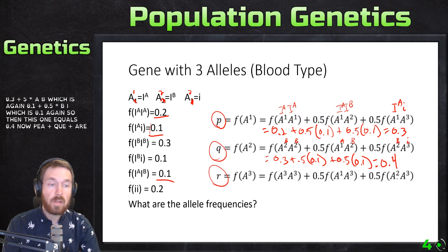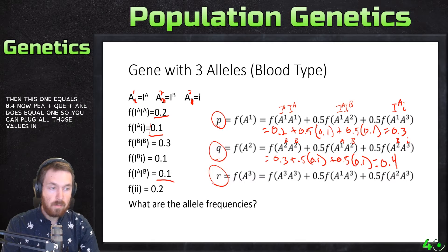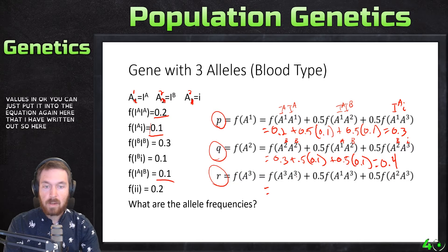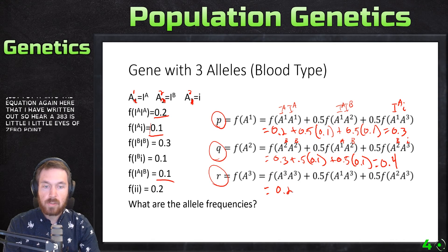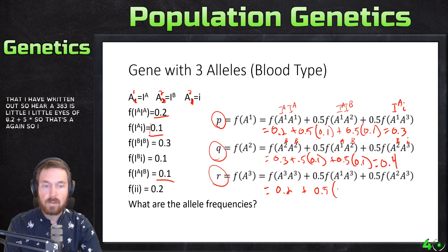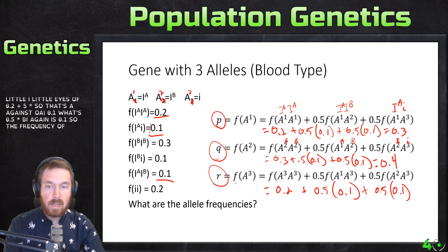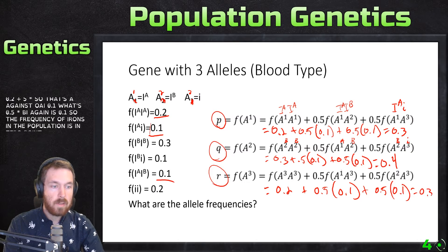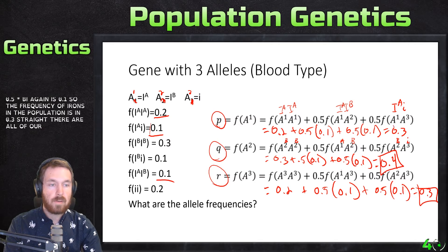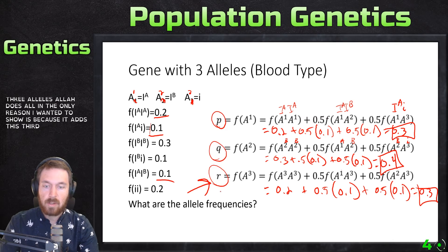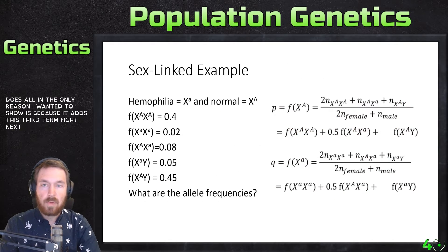Since p + q + r = 1, you can plug in those values or use the equation directly. For r (allele i): r = frequency(A3A3) + 0.5 × frequency(A1A3) + 0.5 × frequency(A2A3) = 0.2 + 0.5(0.1) + 0.5(0.1) = 0.3. So all three allele frequencies are p = 0.3, q = 0.4, r = 0.3. Not too bad — the only addition is this third term.